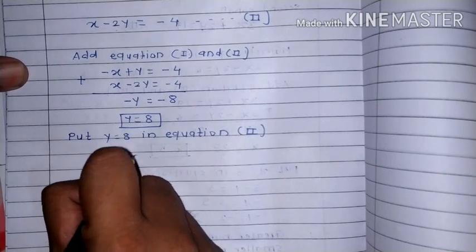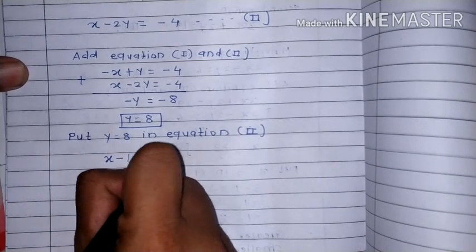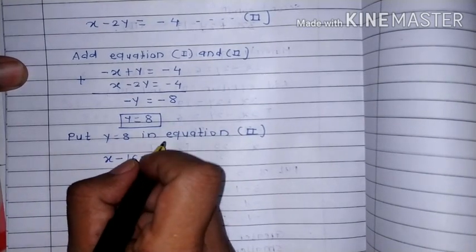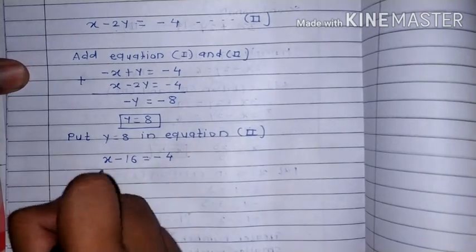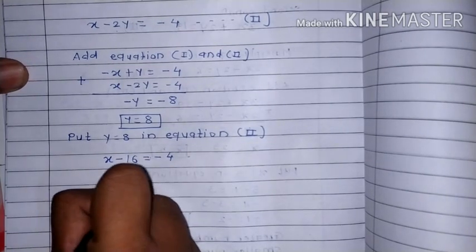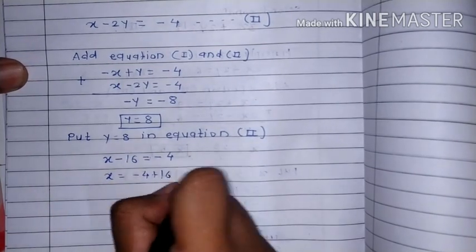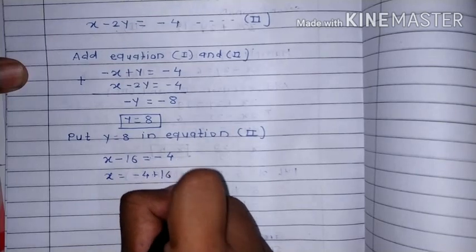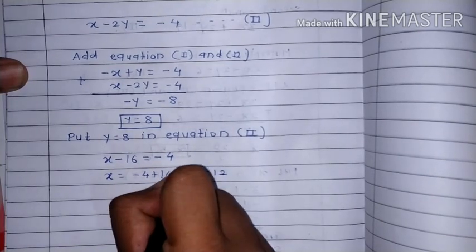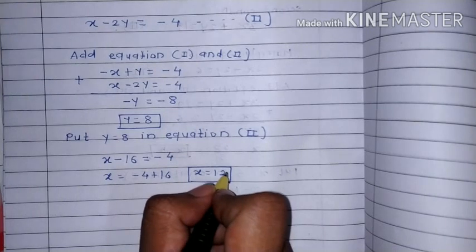Substituting y equal to 8: x minus 16 is equal to minus 4, so x is equal to minus 4 plus 16, therefore x is equal to 12. So x is equal to 12 and y is equal to 8.